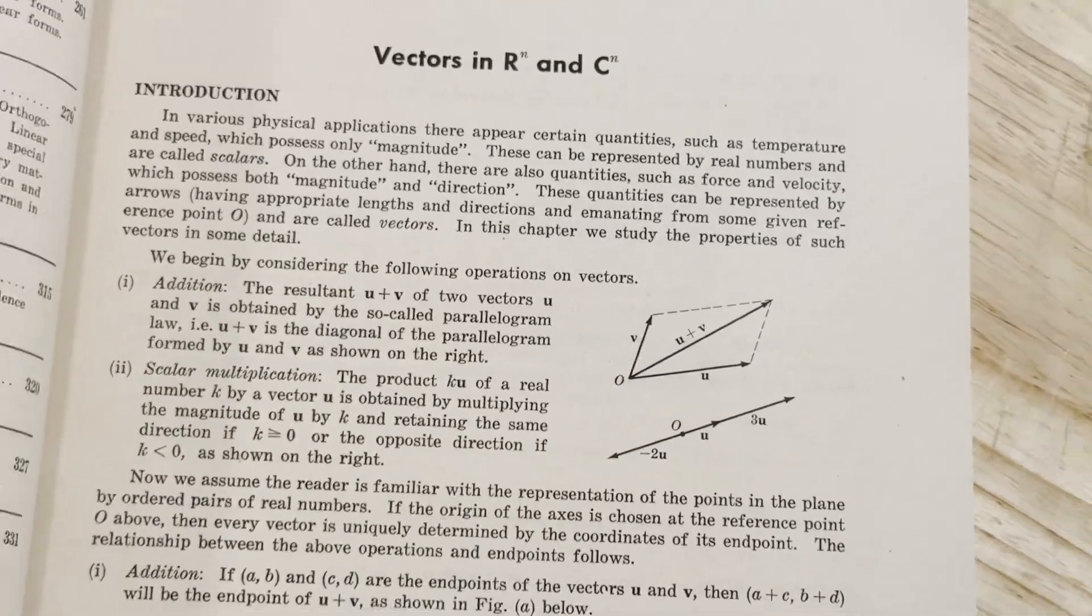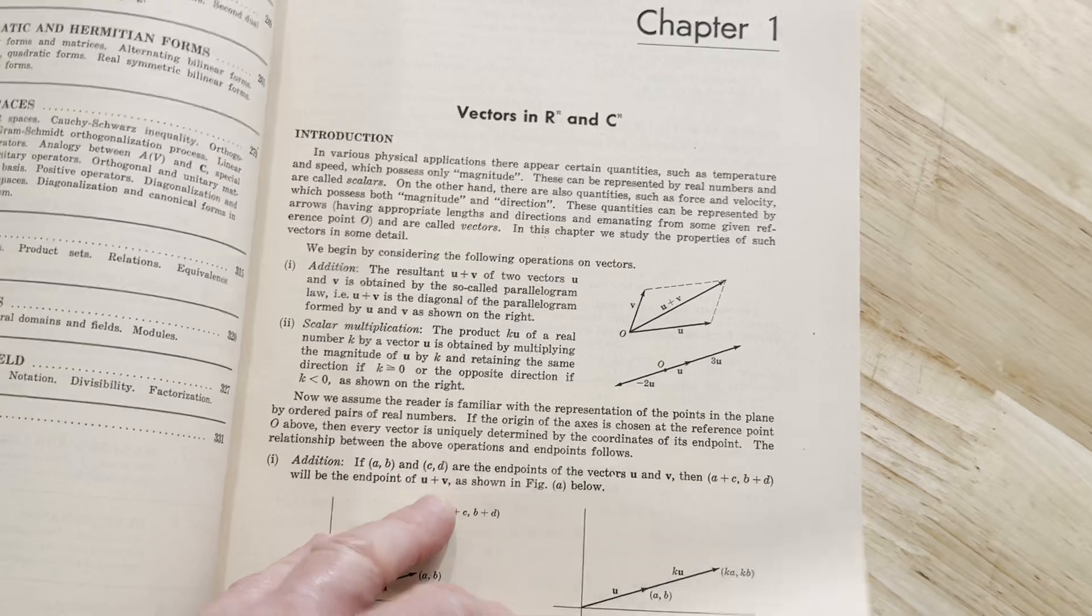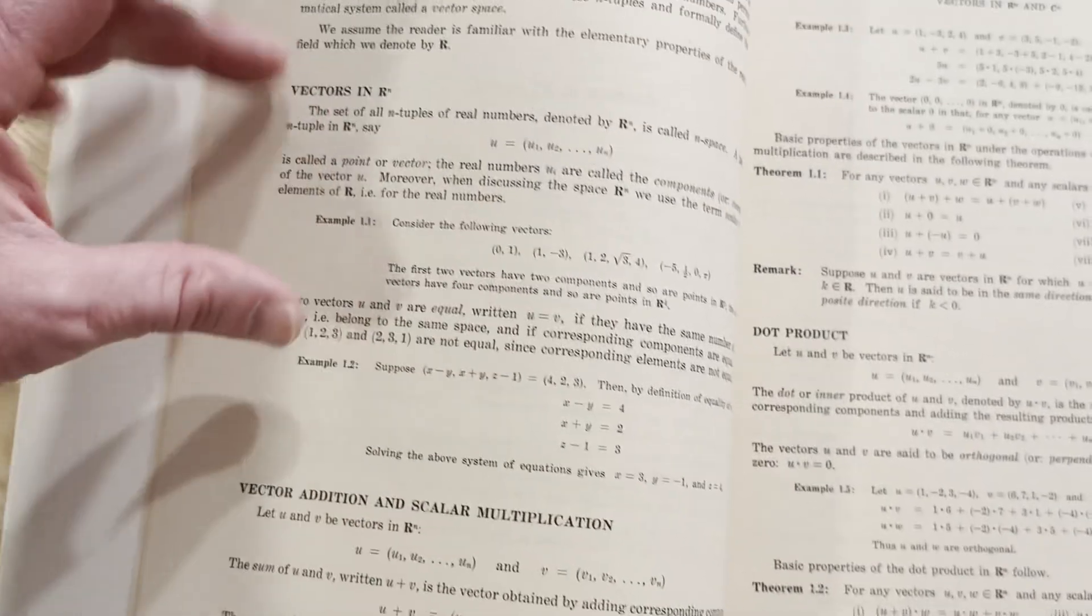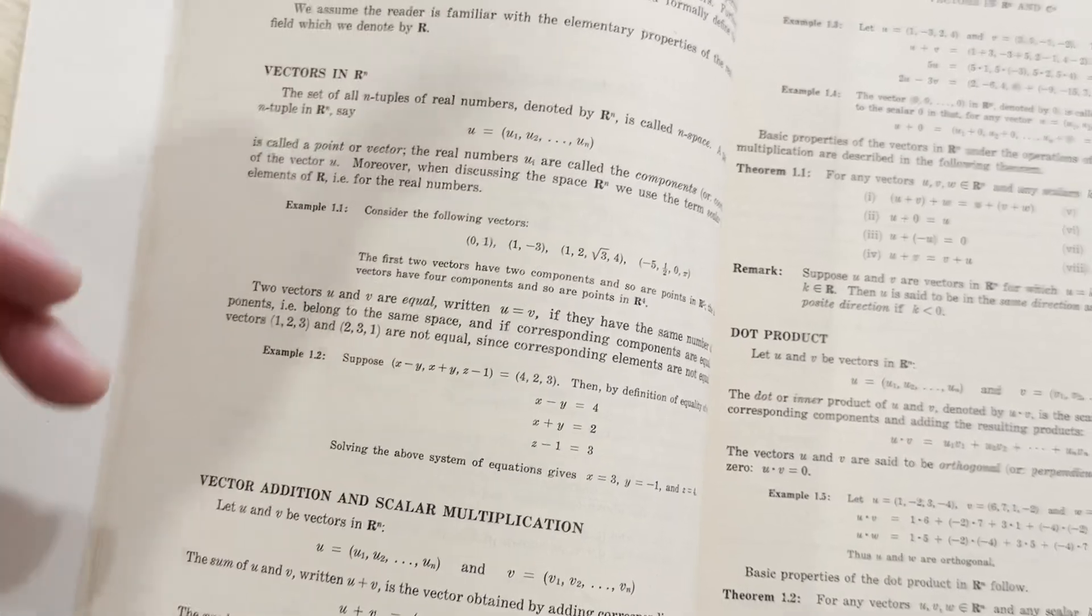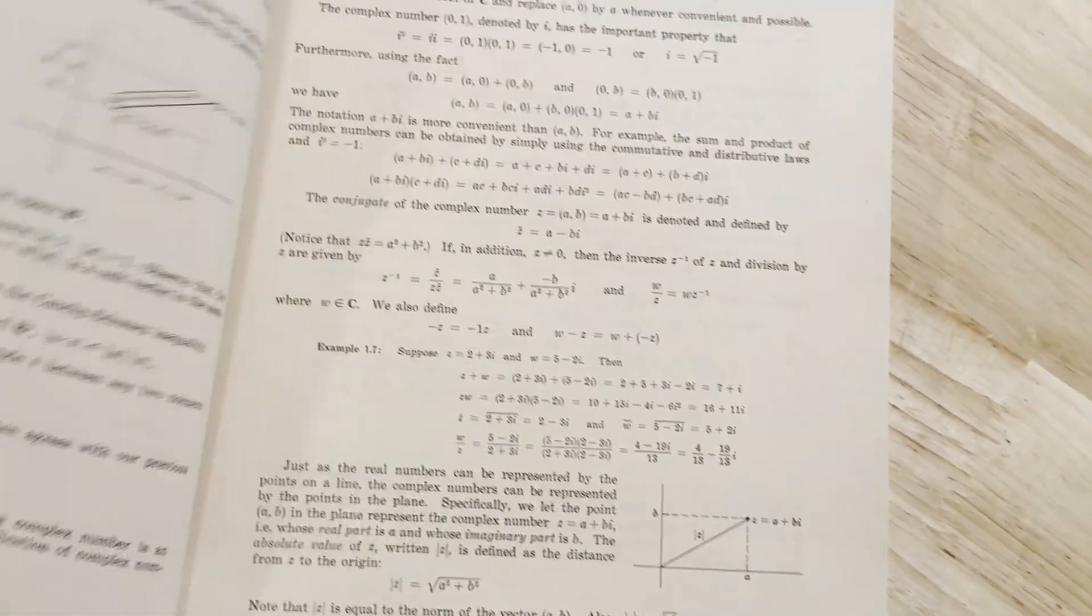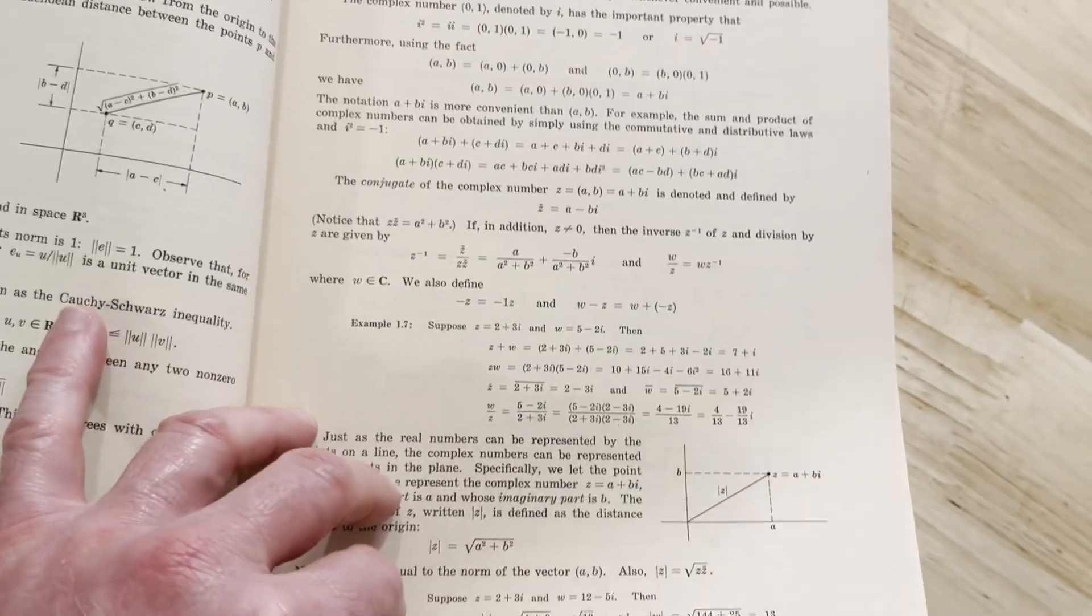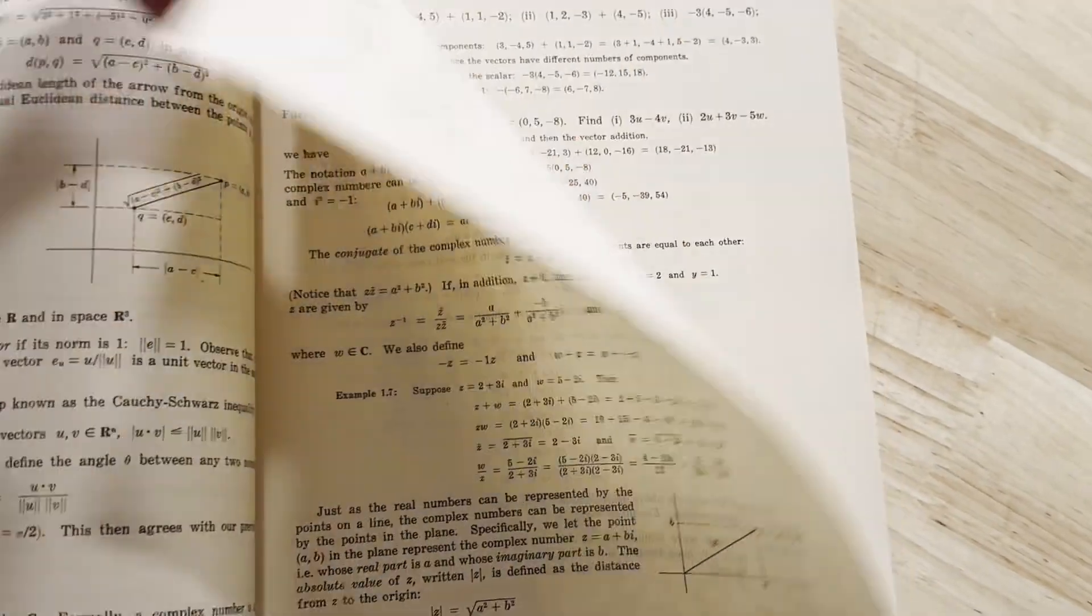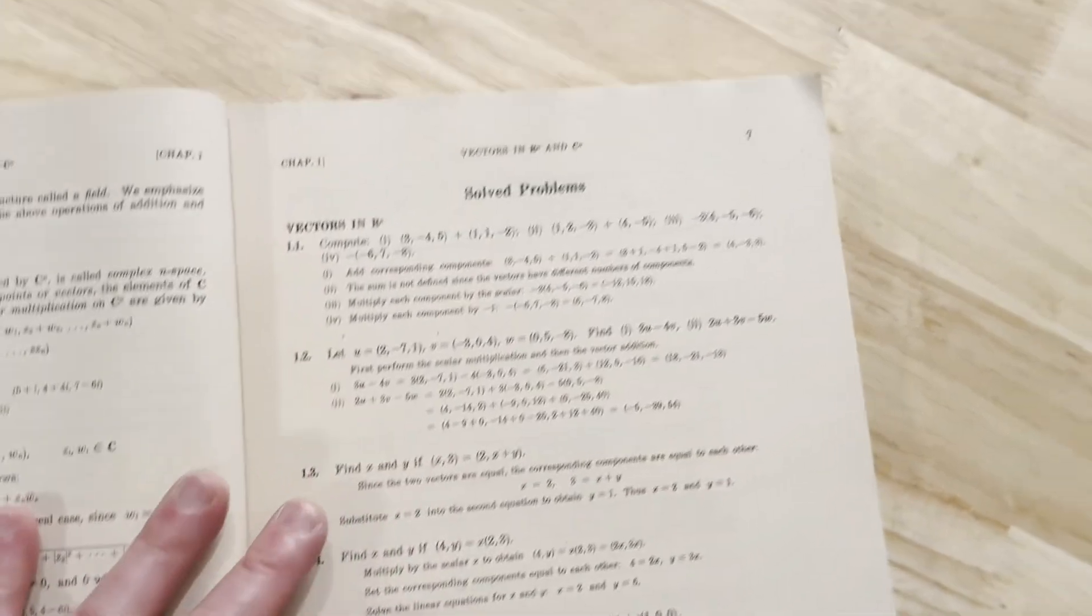And so the general outline of these Schaum's books is you have like an introduction and some knowledge. And then it jumps to more knowledge. Notice it's all broken up nicely. So you've got vectors in Rn, addition, scalar, multiplication. And then at some point after all of these examples, we get to solved problems.